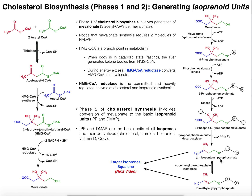Phase two is actually going to give us the isoprenes. Starting with mevalonate, the first enzyme is mevalonate 5-phosphotransferase, sometimes called mevalonate 5-kinase. It takes a phosphate from ATP and phosphorylates the hydroxyl group to give us 5-phosphomevalonate. We then consume another molecule of ATP via phosphomevalonate kinase, which phosphorylates the phosphate to give us 5-pyrophosphomevalonate — recall that a pyrophosphate is two phosphates bound together. Then another kinase phosphorylates a different oxygen to give us 3-phospho-5-pyrophosphomevalonate.